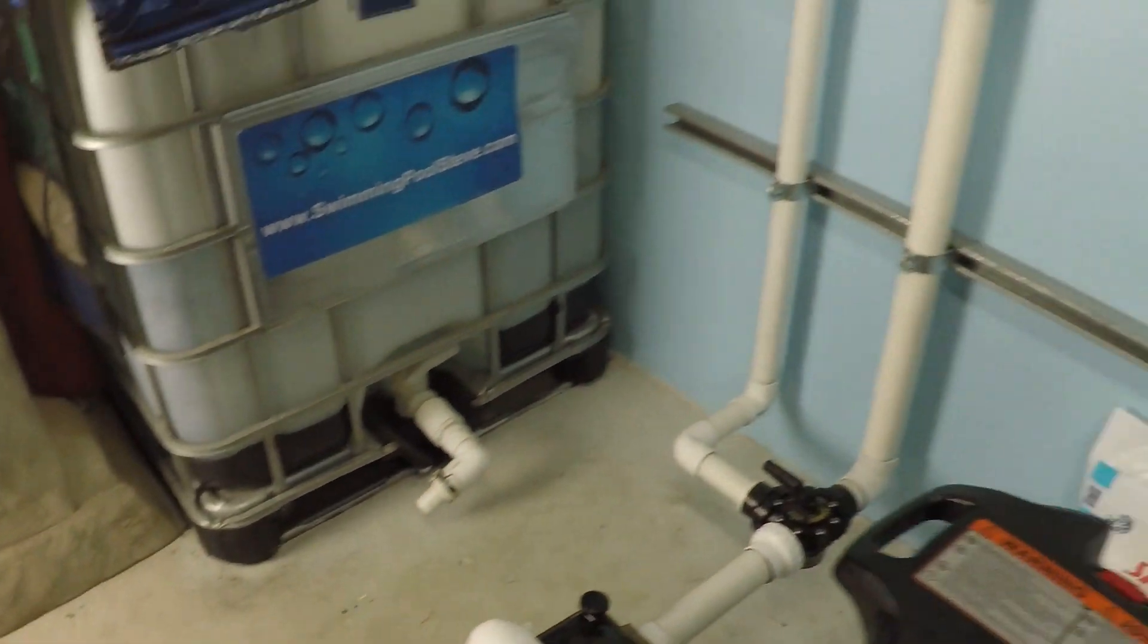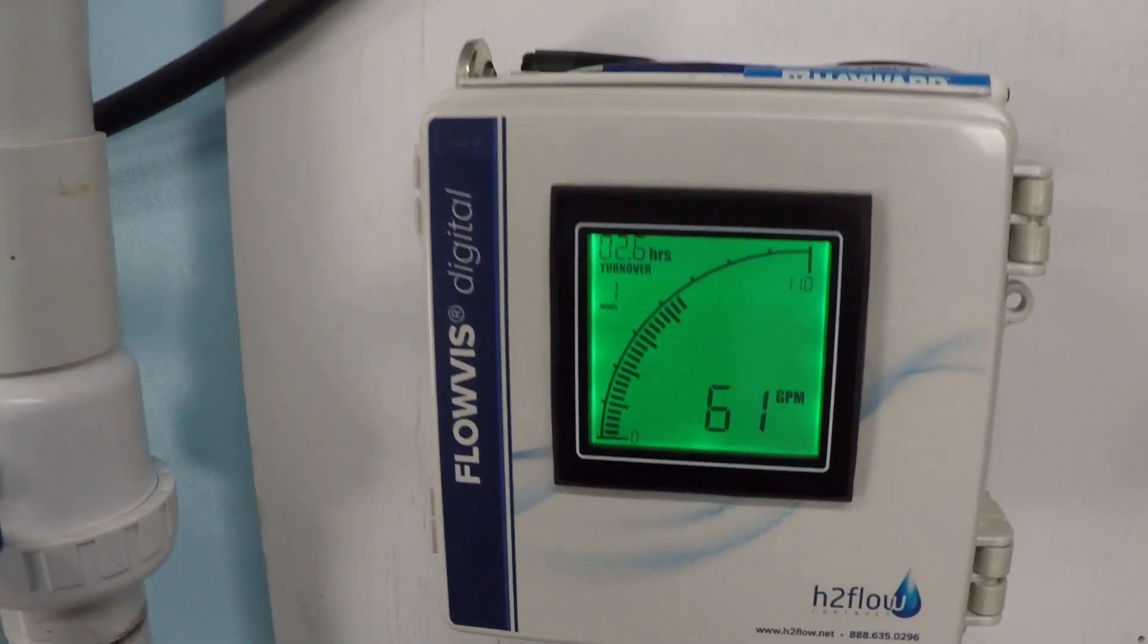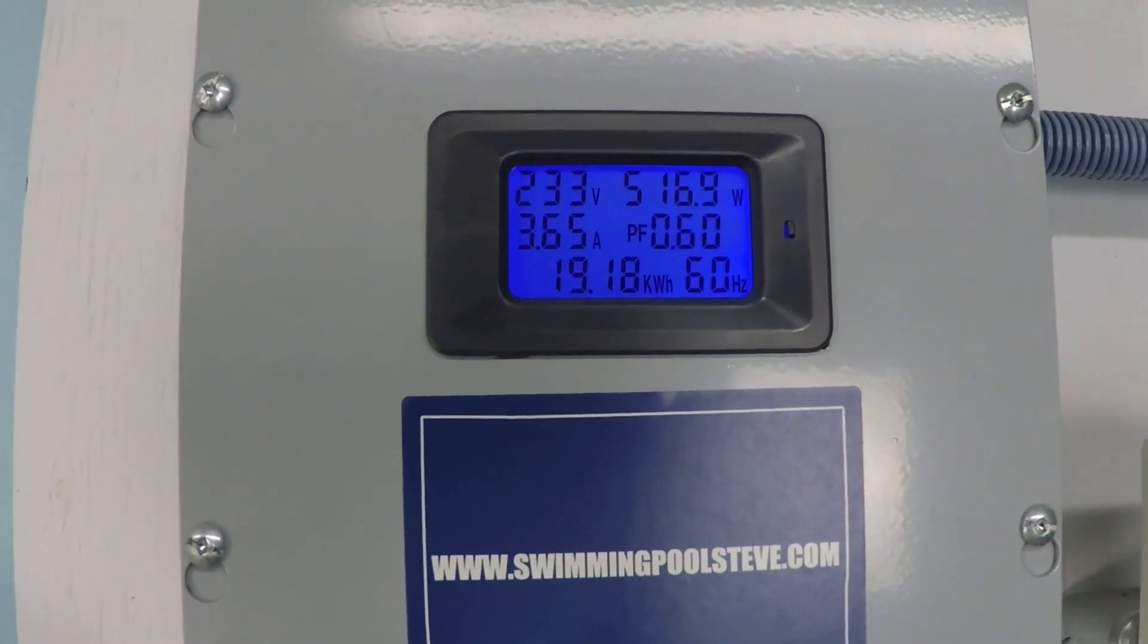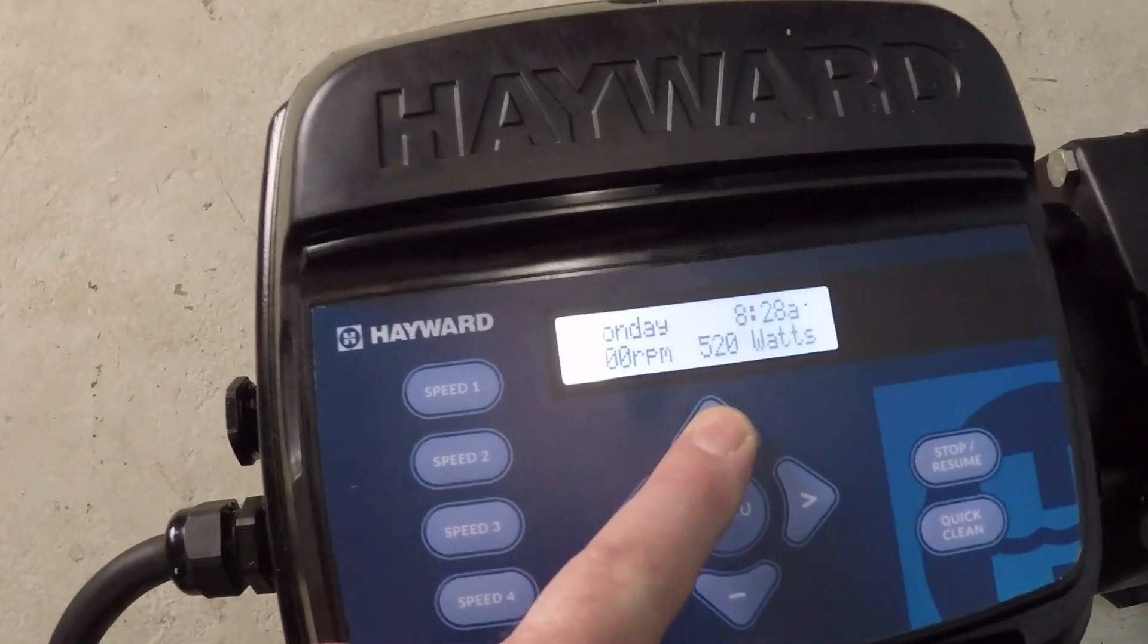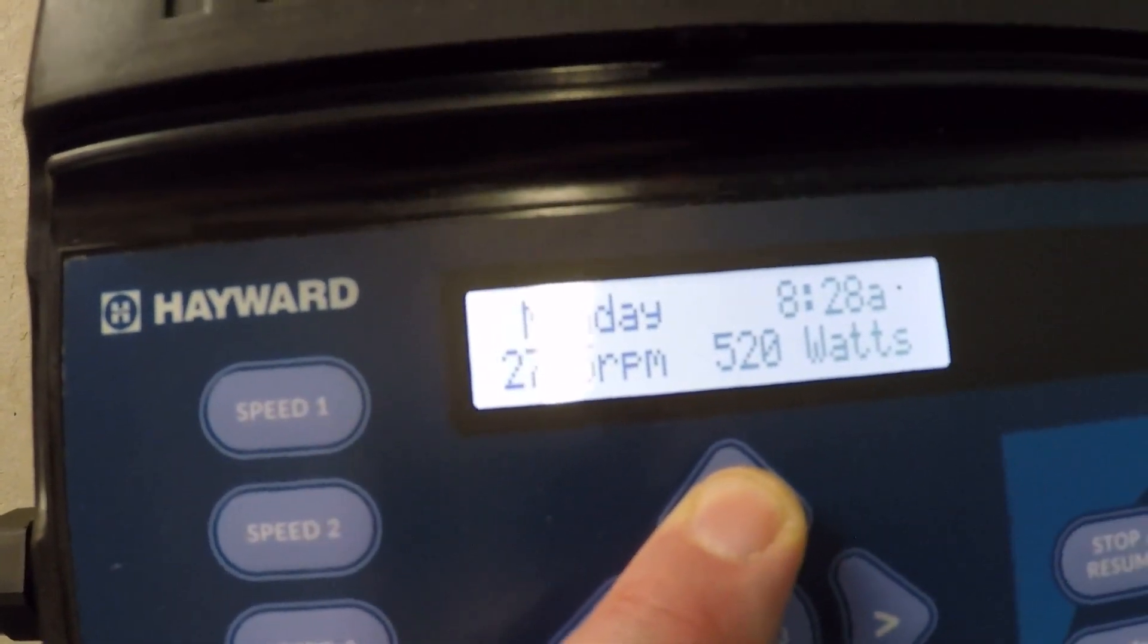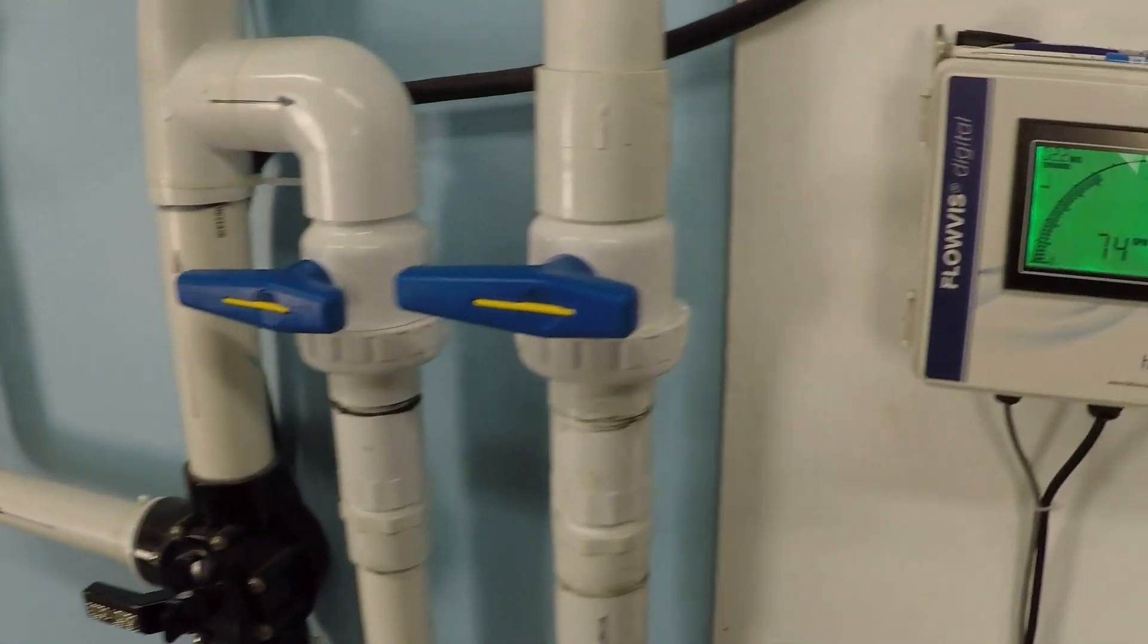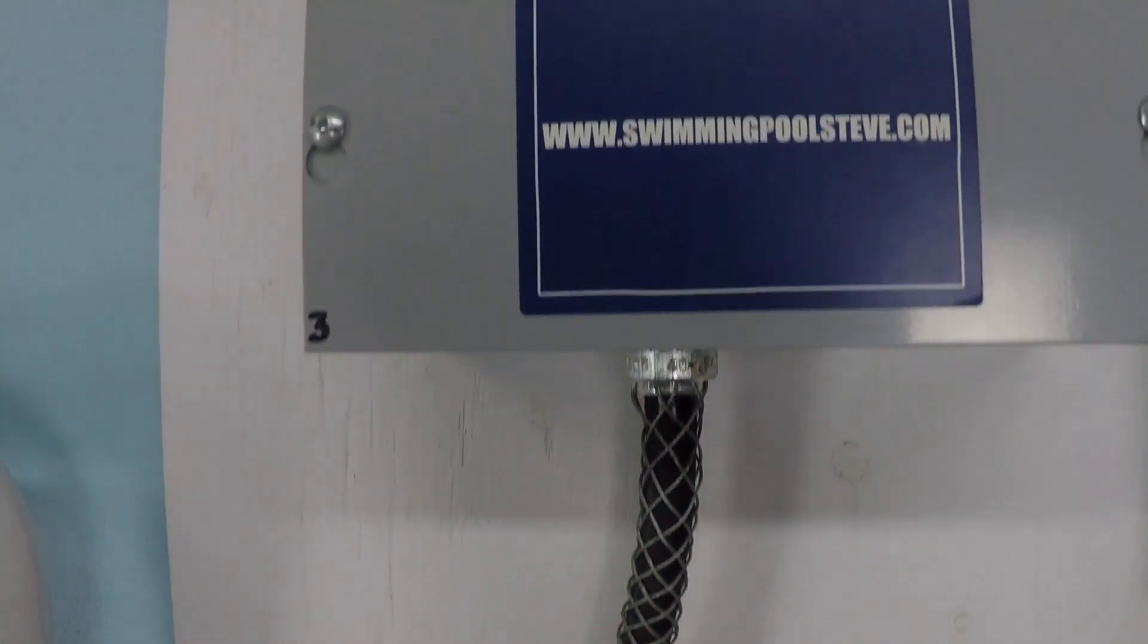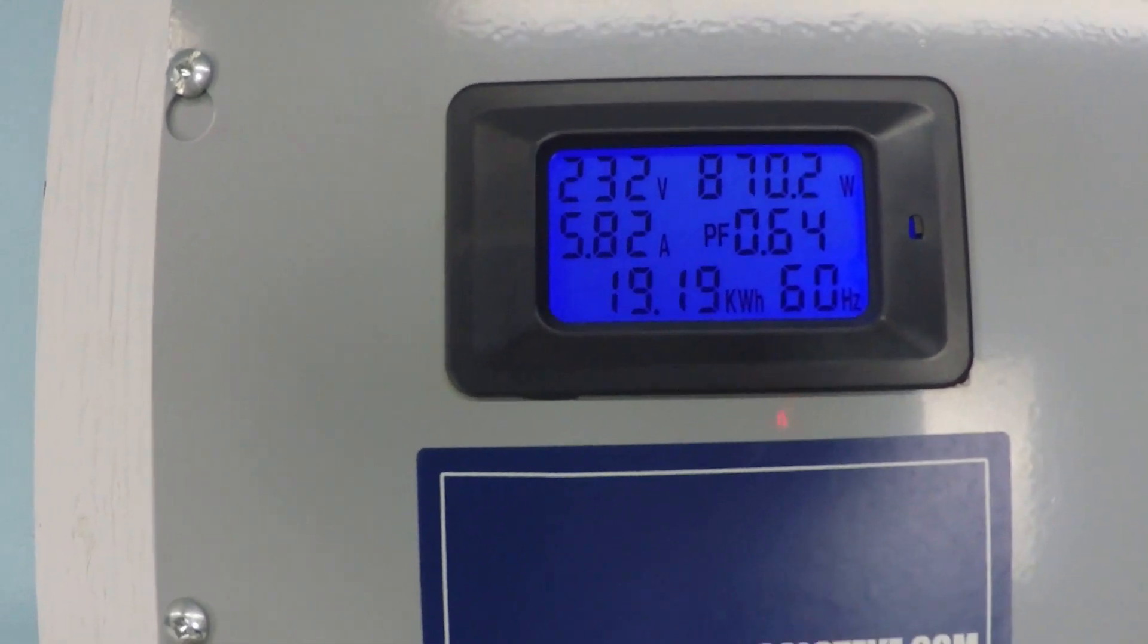2,500 rpm. 516 watts. 3,000 RPM, 75 gallons per minute. 869, 870 watts of power consumption.